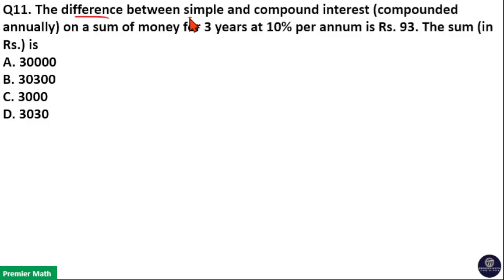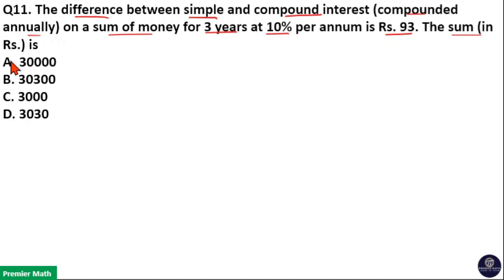The difference between simple and compound interest compounded annually on a sum of money for 3 years at 10% per annum is Rs. 93. The sum in rupees is to be found. Here, 10% is the rate of interest for both simple and compound interest. 10% means 10 by 100, that is equal to 1 by 10.